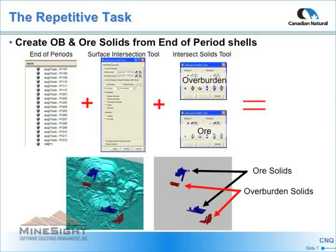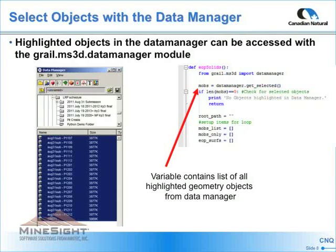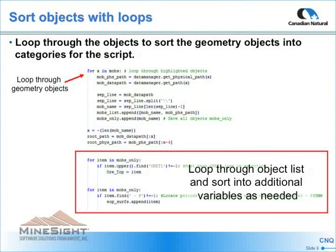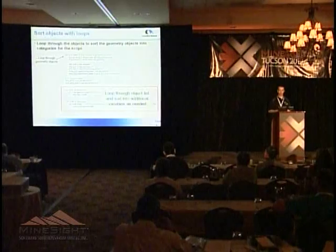To start using Python, you bring objects into the script using the data manager module. You highlight the objects in the data manager and run the script — a simple command brings all highlighted objects into the script. Then with a quick loop through the selected objects, you sort them into different categories. In this example, I'm finding my ORT1 surface and moving it to my ORTOP variable, and any objects with a dash-P in the file name I move to my end-of-period surface list.